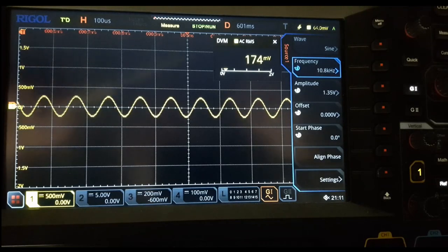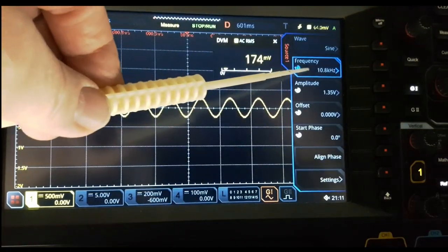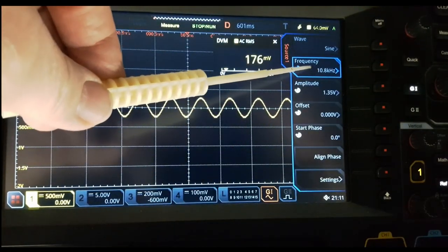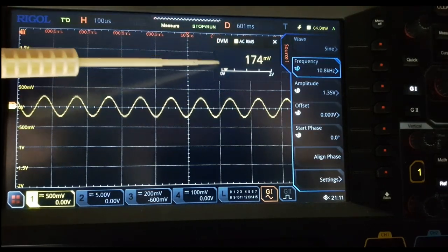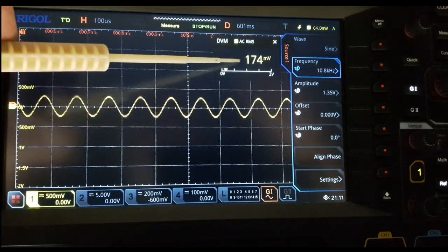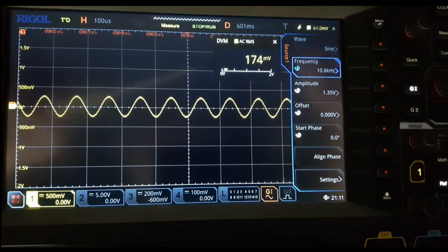So you can see our situation on the scope here. The generator is putting out this frequency up here. Right now, 10.8 kilohertz. And the voltage across that inductor right now is 174 millivolts.